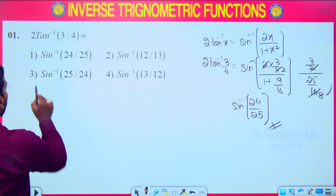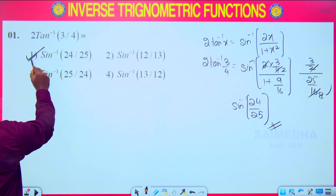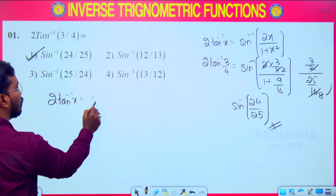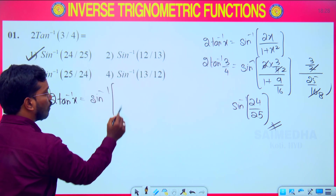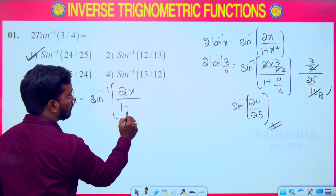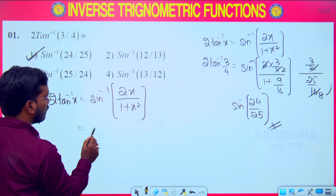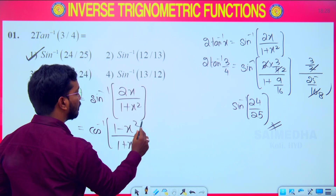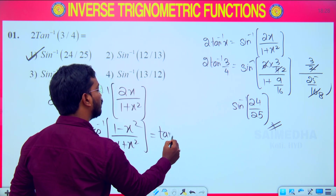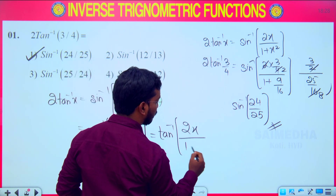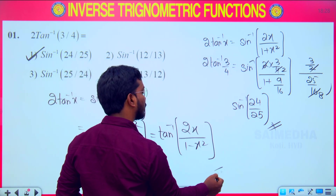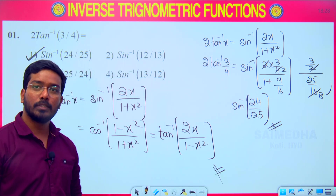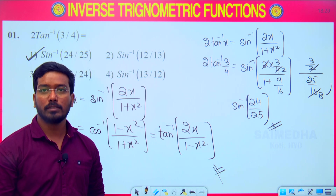The answer is sin⁻¹(24/25), which is option number 1. Remember: 2 tan⁻¹x has three formulas — it equals sin⁻¹(2x/(1+x²)), cos⁻¹((1−x²)/(1+x²)), and tan⁻¹(2x/(1−x²)). These are three conversion formulas for 2 tan⁻¹ in terms of sin, cos, and tan.